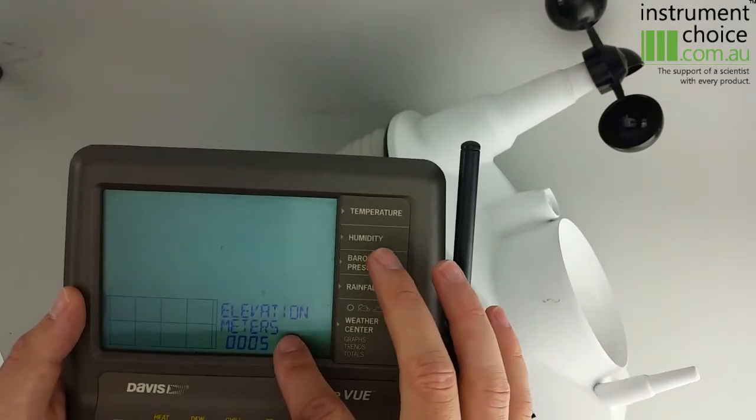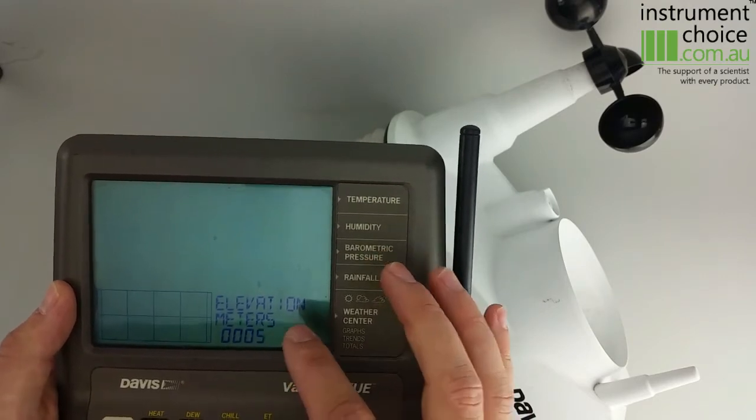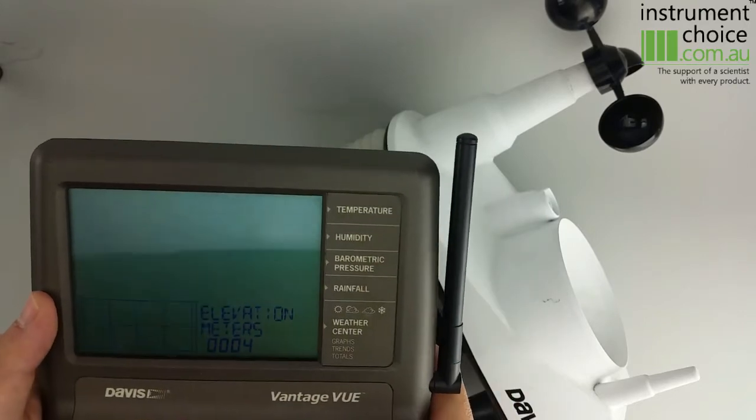You then go through and set up your elevation. We're based in Dry Creek, so we're not that far above sea level. We're 5 metres above sea level. So we've set that on our console by pushing the up and down arrow.